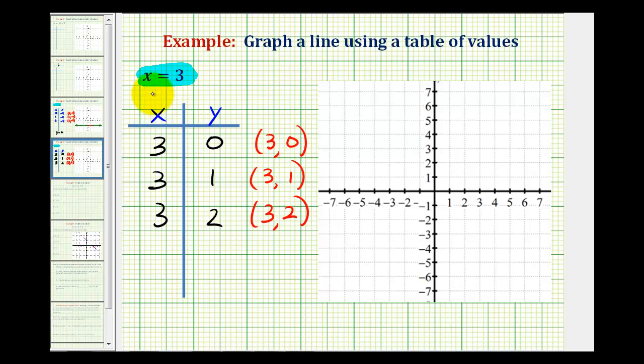Again, notice how whichever point we have, x is always equal to positive three. Let's go ahead and plot these three points and see what we have. The point three, zero would be this point here on the x-axis; this is also our x-intercept. The point three, one—from the origin, we'd move right three units and up one unit here.